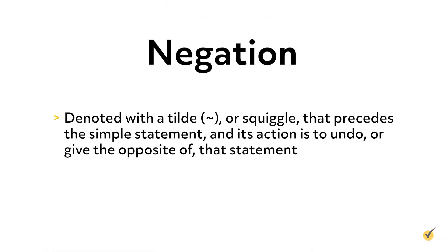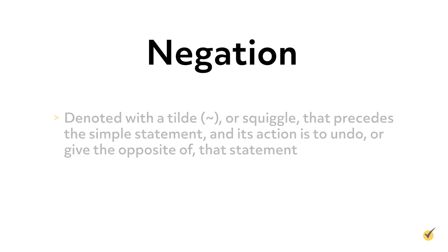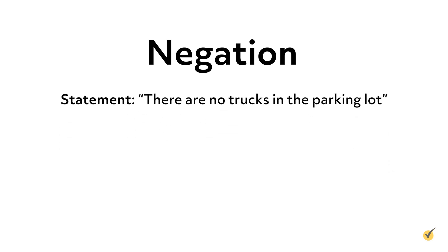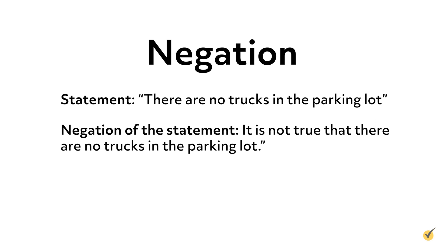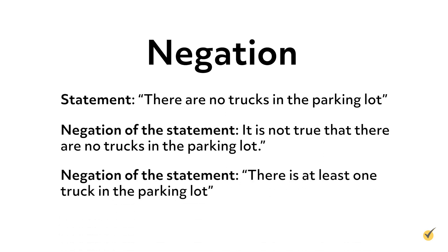The negation operator is denoted with a tilde or squiggle that precedes the simple statement, and its action is to undo or give the opposite of that statement. For example, if we wanted to negate the statement 'there are no trucks in the parking lot,' this would be like saying it is not true that there are no trucks in the parking lot — in other words, there is at least one truck in the parking lot. To negate a statement is to claim that it is untrue.